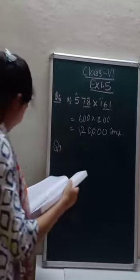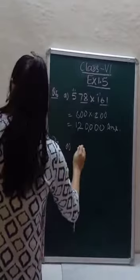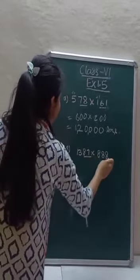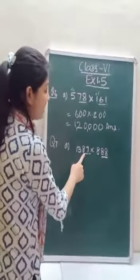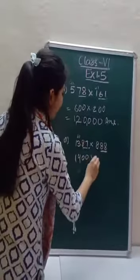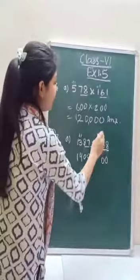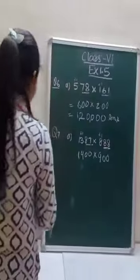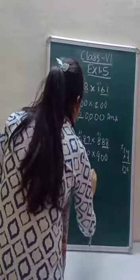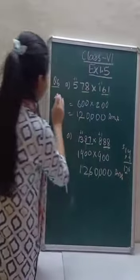Question number 7: estimate the following products by rounding off each factor to its nearest 100. See the last two digits — 87 is greater than 50, so put zeros in ones and tens and add 1 in hundreds, giving 1400. Similarly 88 is greater than 50, so again add 1 in hundreds, giving 1400. So 1400 times 1400 — working through the multiplication — gives 16,00,000 as the answer. You have to do questions 6 and 7 like this.